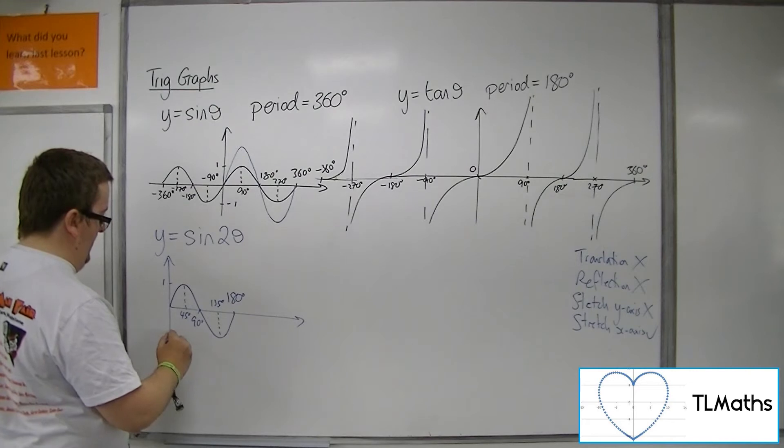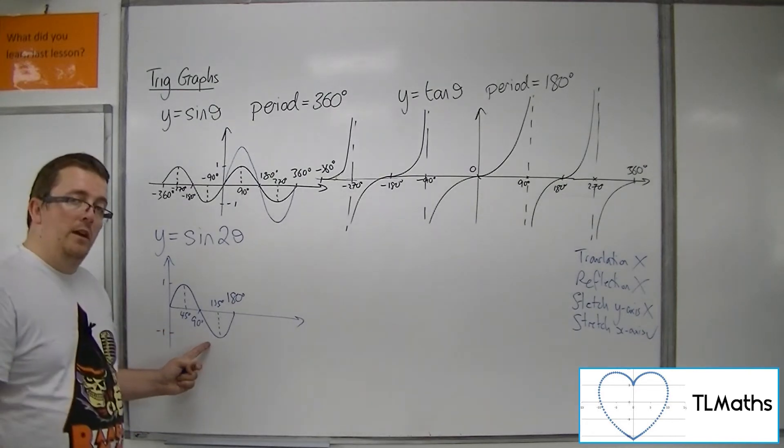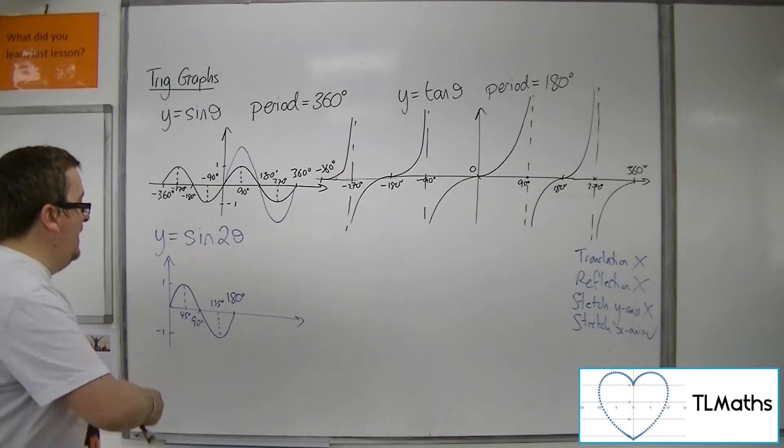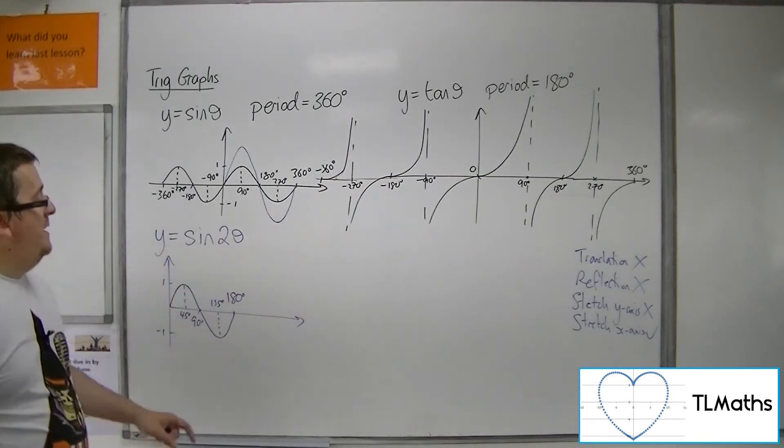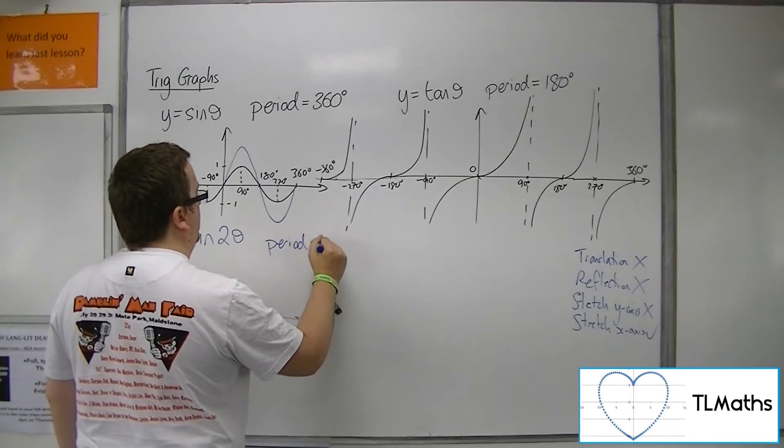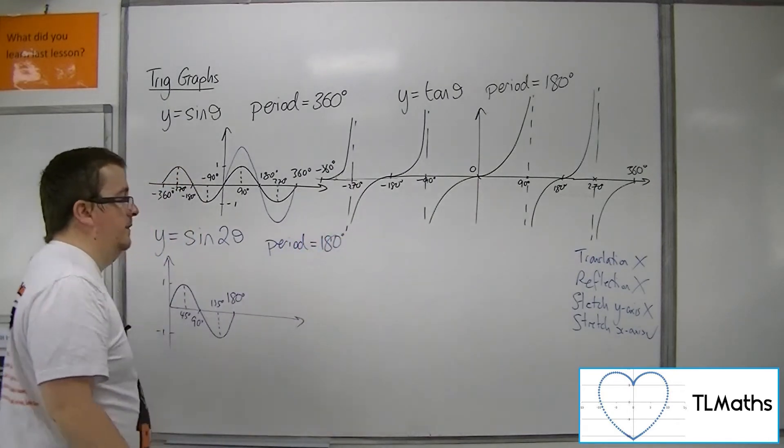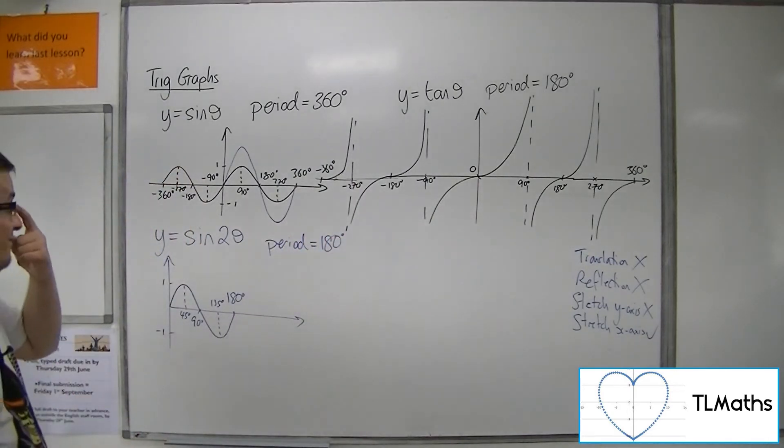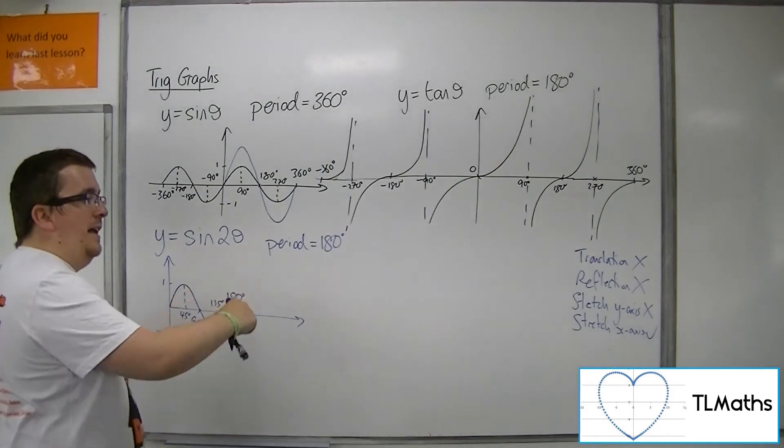So this is what sine of 2 theta would look like. It's still repeating itself, but now it's repeating itself every 180. So the period here has halved.